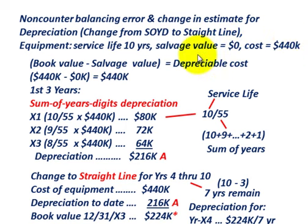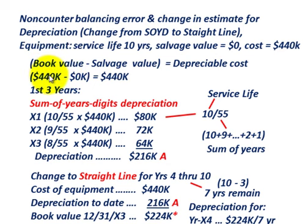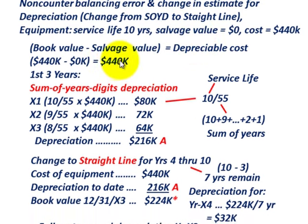The first thing we have to do is determine its depreciable cost. That would simply be its book value or cost — $440,000 — less its salvage value. Since it has zero salvage value, our depreciable cost is simply $440,000.